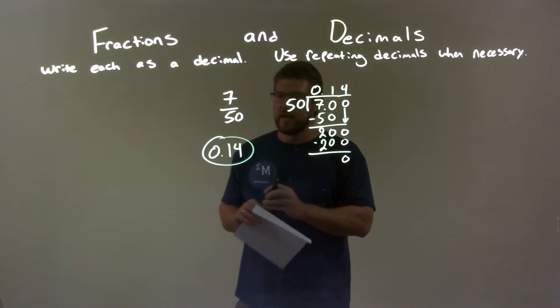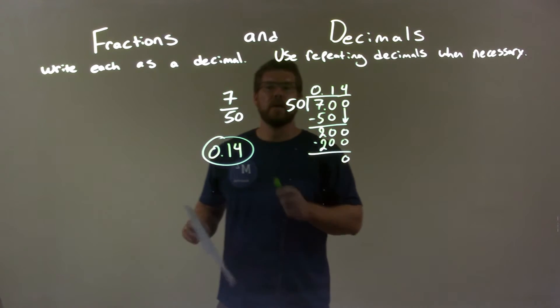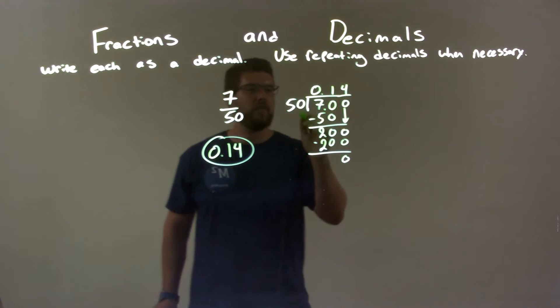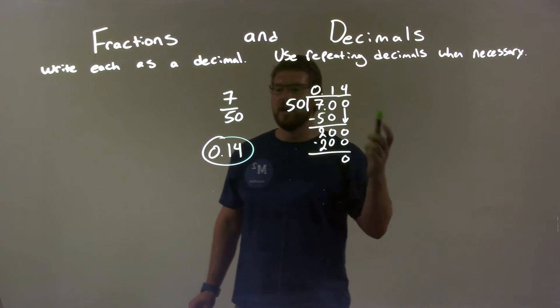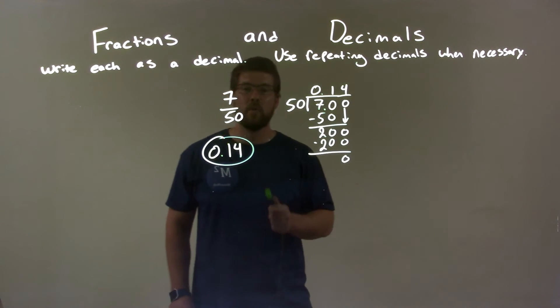That's it. So, quick recap. We're given 7 over 50, and we can write that as a decimal. So, we have 50 that goes into 7. We did some long division, and that gives us 0.14, so our final answer is 0.14.